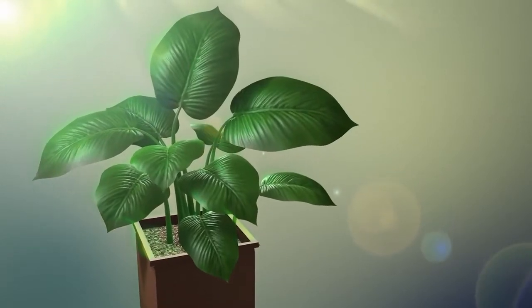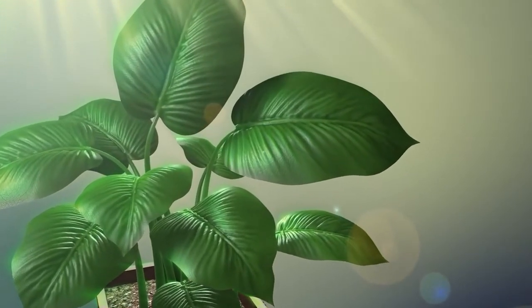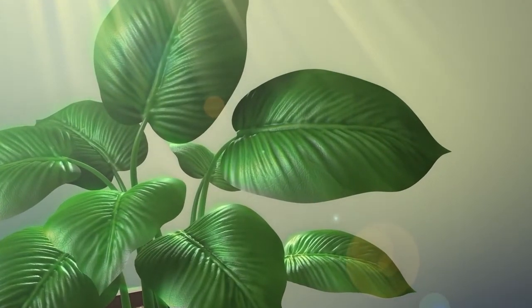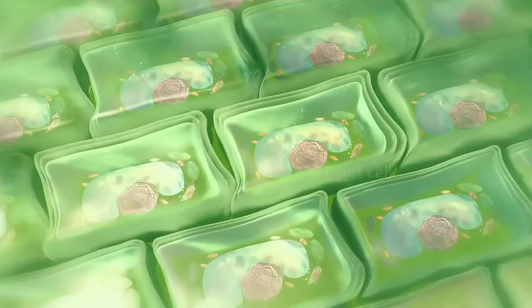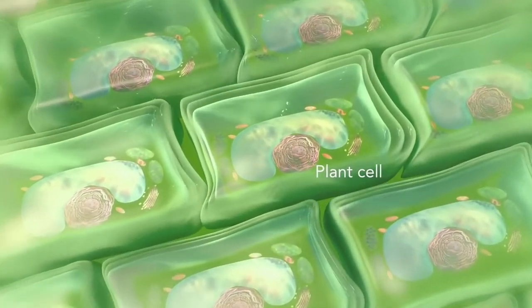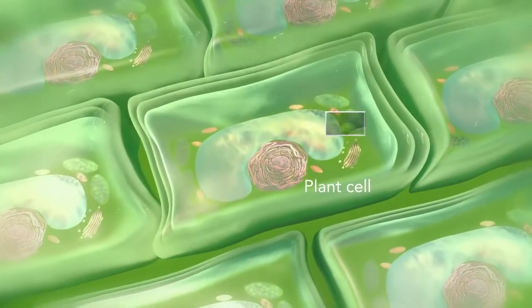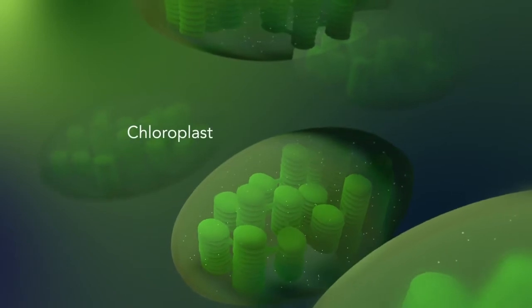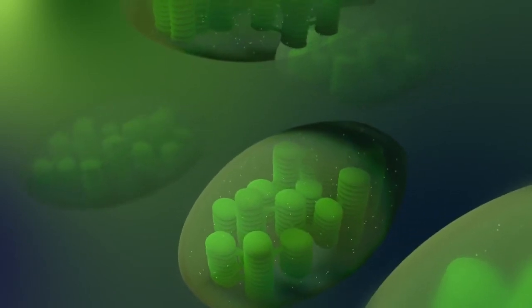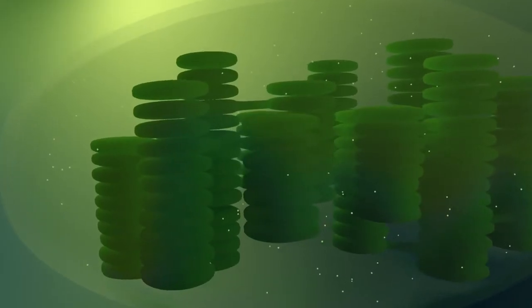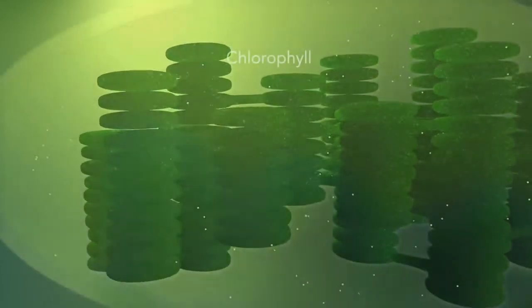Some organisms, such as plants that are photo-autotrophic, meaning they capture sunlight for energy, have cells with an organelle called a chloroplast. The chloroplast is where photosynthesis happens. It's green because it has a green pigment called chlorophyll.